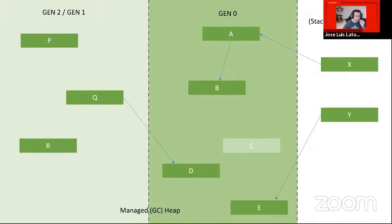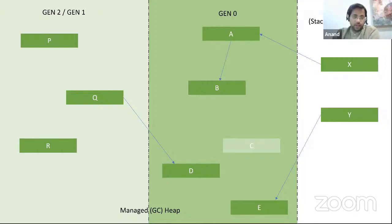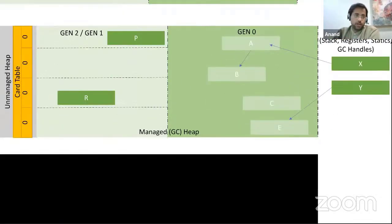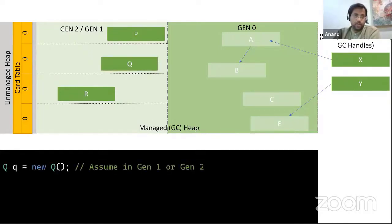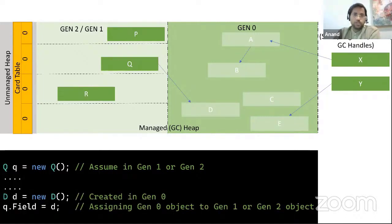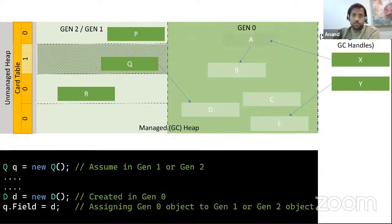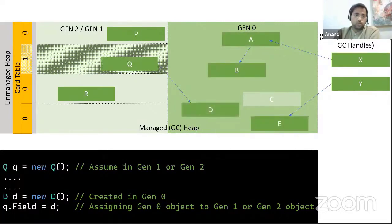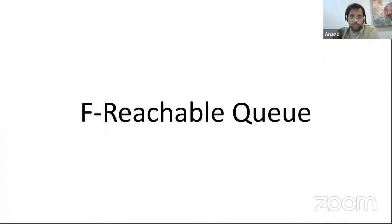So GC needs a way to find these cross-generation references. The way it does this is using something called a card table. Every bit in the card table maps to a range of memory in the heap. Suppose we create an object Q in generation two or generation one, then later create an object D and assign it to object Q — this is where the card table bit is set, marking that entire memory range as dirty. Later, when the garbage collector runs, it marks the objects and also looks at the dirty memory range, considering that as a root. This is how GC ensures all objects are properly considered for garbage collection.